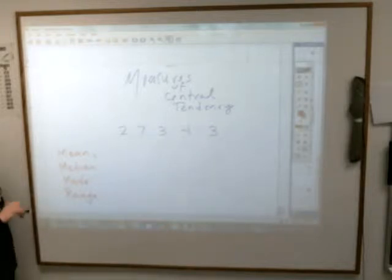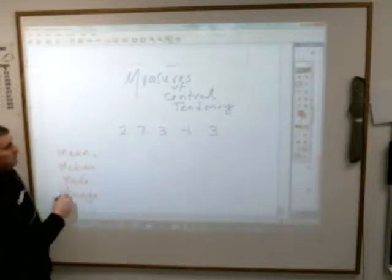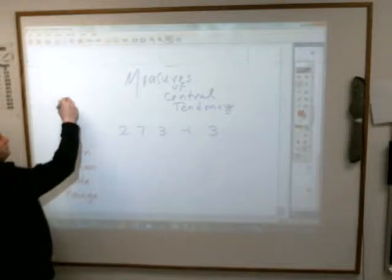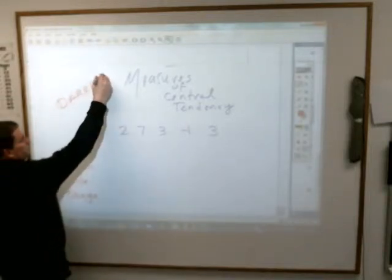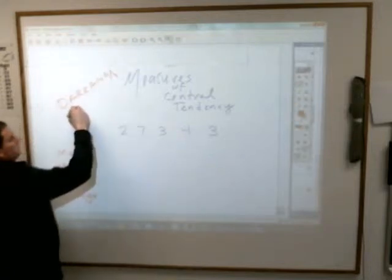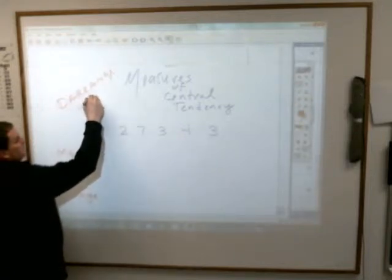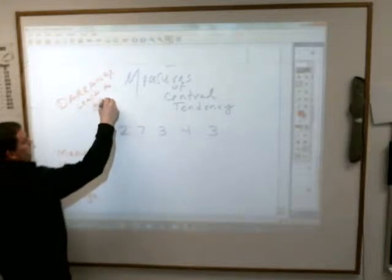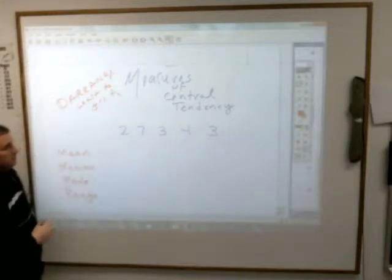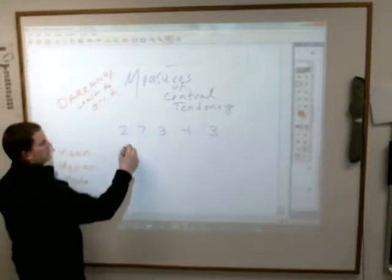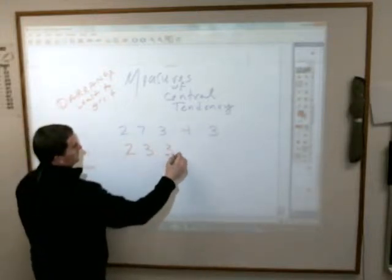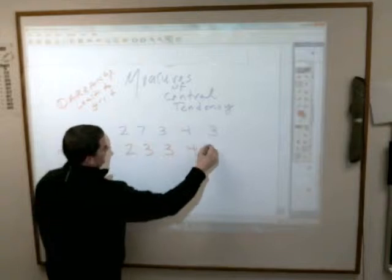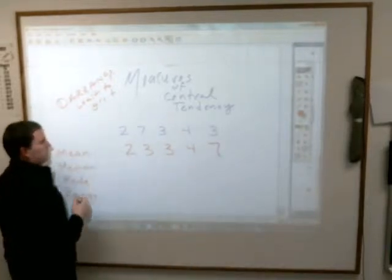The first thing really you're supposed to do when you do measures of central tendency is to arrange them from least to greatest, just so that you can see them. So that means you'll go and make this two, three, three, four, and seven. We'll just arrange all those together.